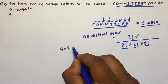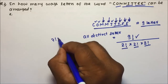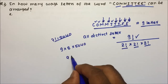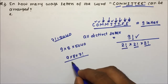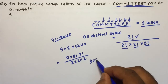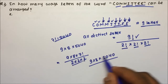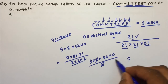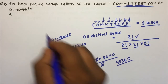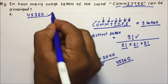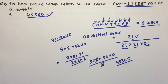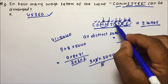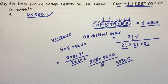Now, 9 factorial = 9 × 8 × 7 factorial, and 7 factorial equals 5040. The denominator is 2 × 2 × 2 = 8. So we get (9 × 8 × 5040) / 8 — the 8's cancel — giving 9 × 5040 = 45360. So there are 45,360 ways in which the letters of the word COMMITTEE can be arranged, even though M, T, and E each repeat 2 times.